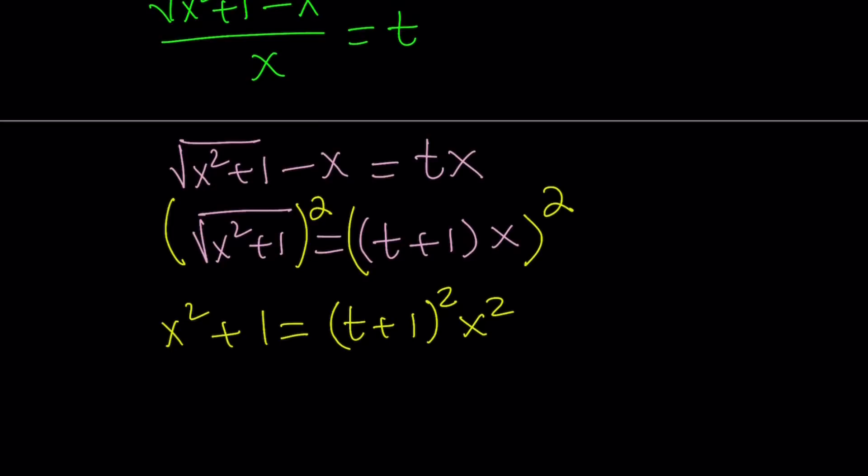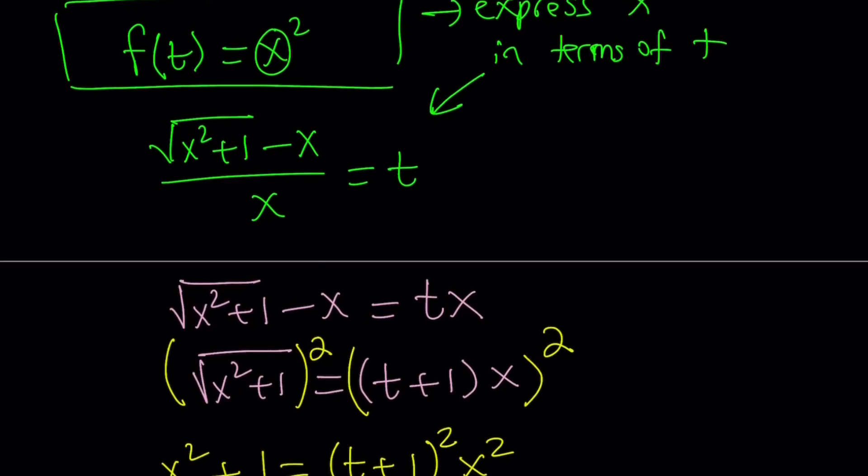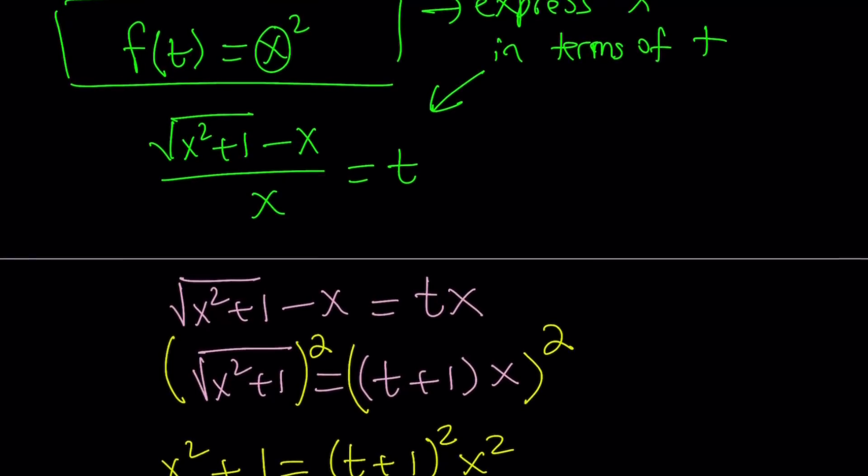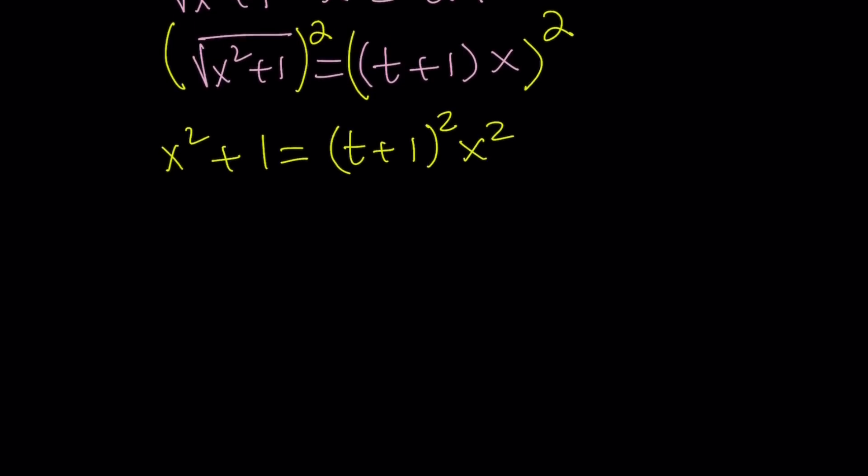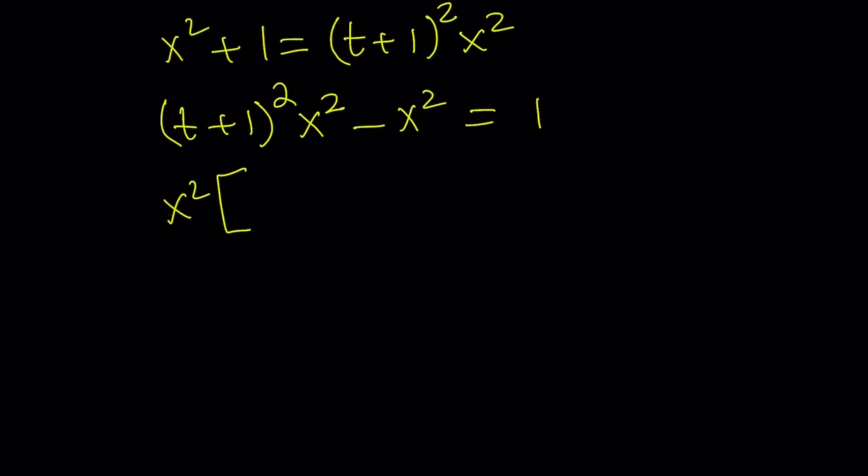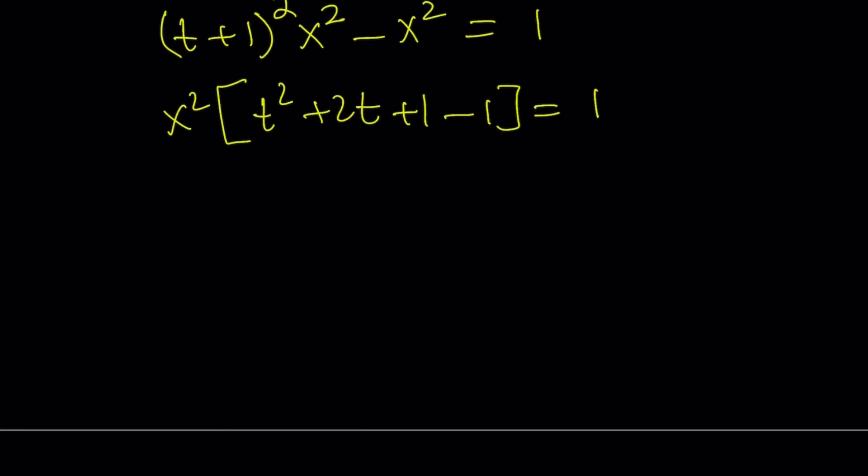Now I do have x squared on both sides, and we are trying to express x in terms of t. Well, I shouldn't necessarily say express x in terms of t, either x or x squared. You can tell by this equation that x squared is very easy to isolate. So let's do it. Subtract x squared from both sides and you're going to get (t+1)² x² minus x² equals 1. I can take out x squared, and inside the parentheses I have t²+2t+1 minus 1. Cancel out the 1, then divide both sides by t²+2t. So x squared equals 1 over t squared plus 2t.